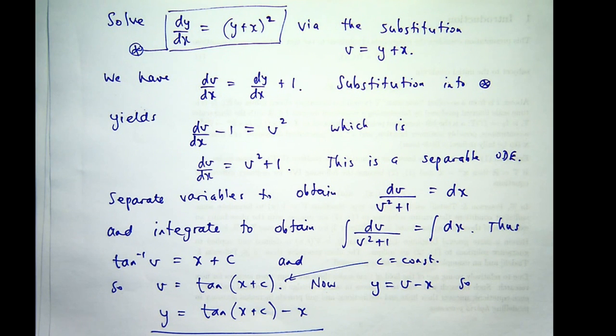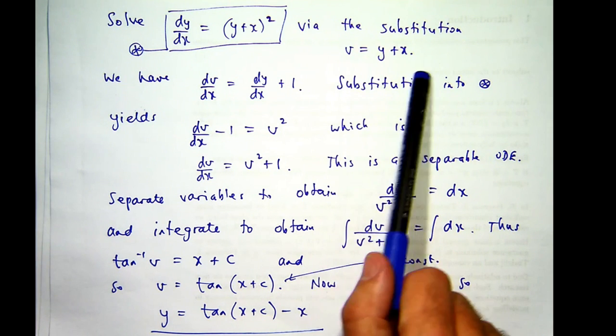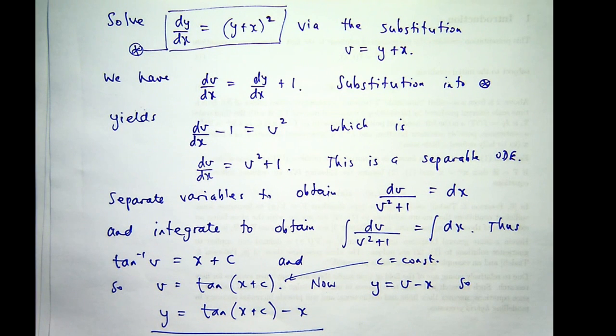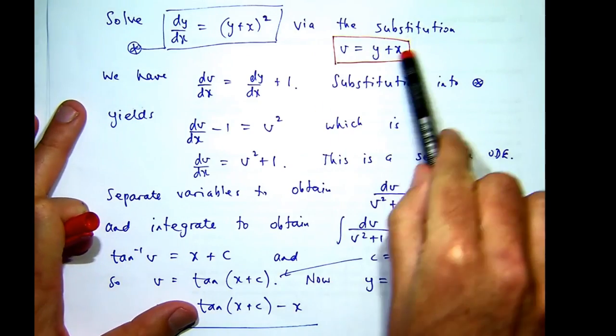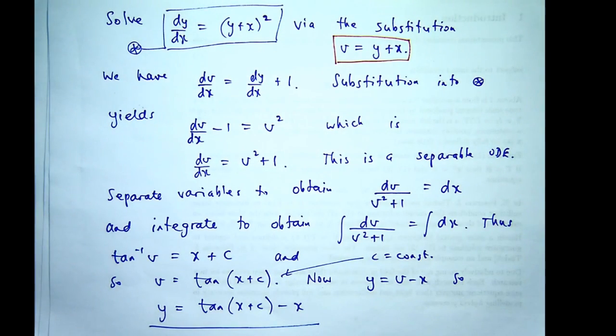So that was a relatively straightforward example because we were given the substitution. We were given that this substitution will help us solve the problem. Now, that's not always done, and a key piece of understanding with these substitution problems is how do I come up with a particular substitution rather than just being given it and working with it. Well, that's quite difficult. So, does anyone know why this particular substitution was chosen?